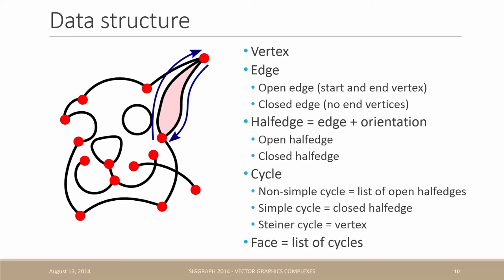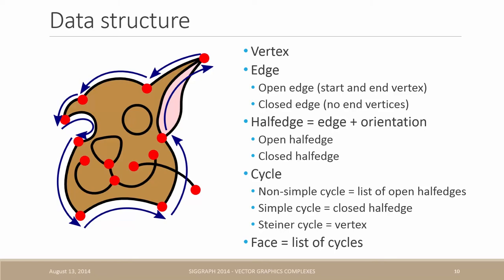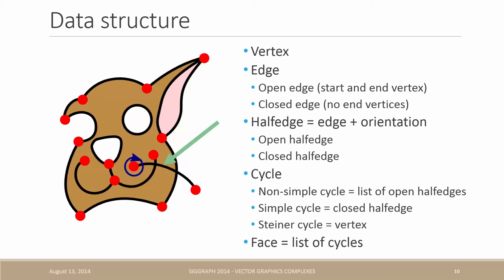Finally, we define a face as a list of cycles. Here we have one face with a unique cycle composed of two half edges and here is another example of a face with a unique cycle. By using additional cycles, we can represent holes in the face. Finally, Steiner's cycles can be used to attach an edge such as this whisker to the face.